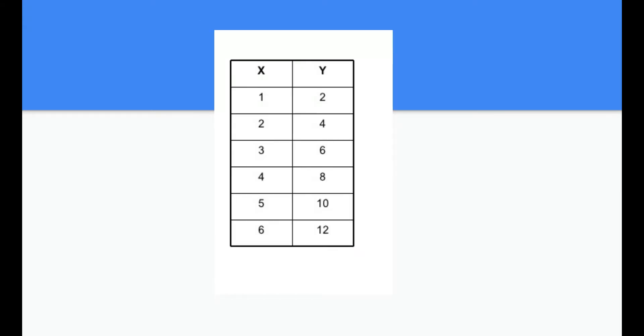When you have a table, a table might be the easiest one because all you have to do is go to the x value column and see if any of your numbers repeat. So one, two, three, four, five, six, nothing repeats. Check, this is a function.